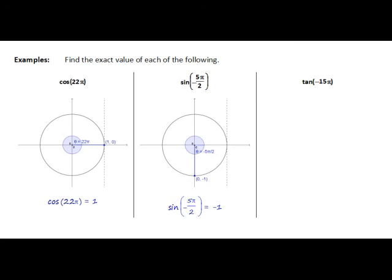And lastly thinking about tan of negative 15 pi — again we're looking at our unit circle, trying to work out where negative 15 pi is. Again we're looking at a negative angle, so we're moving in a clockwise direction from the positive x axis, counting in multiples of pi. Around here at the negative x axis will be negative pi. Back to the positive x axis will be negative 2 pi. Around here back to the negative x axis will be negative 3 pi.